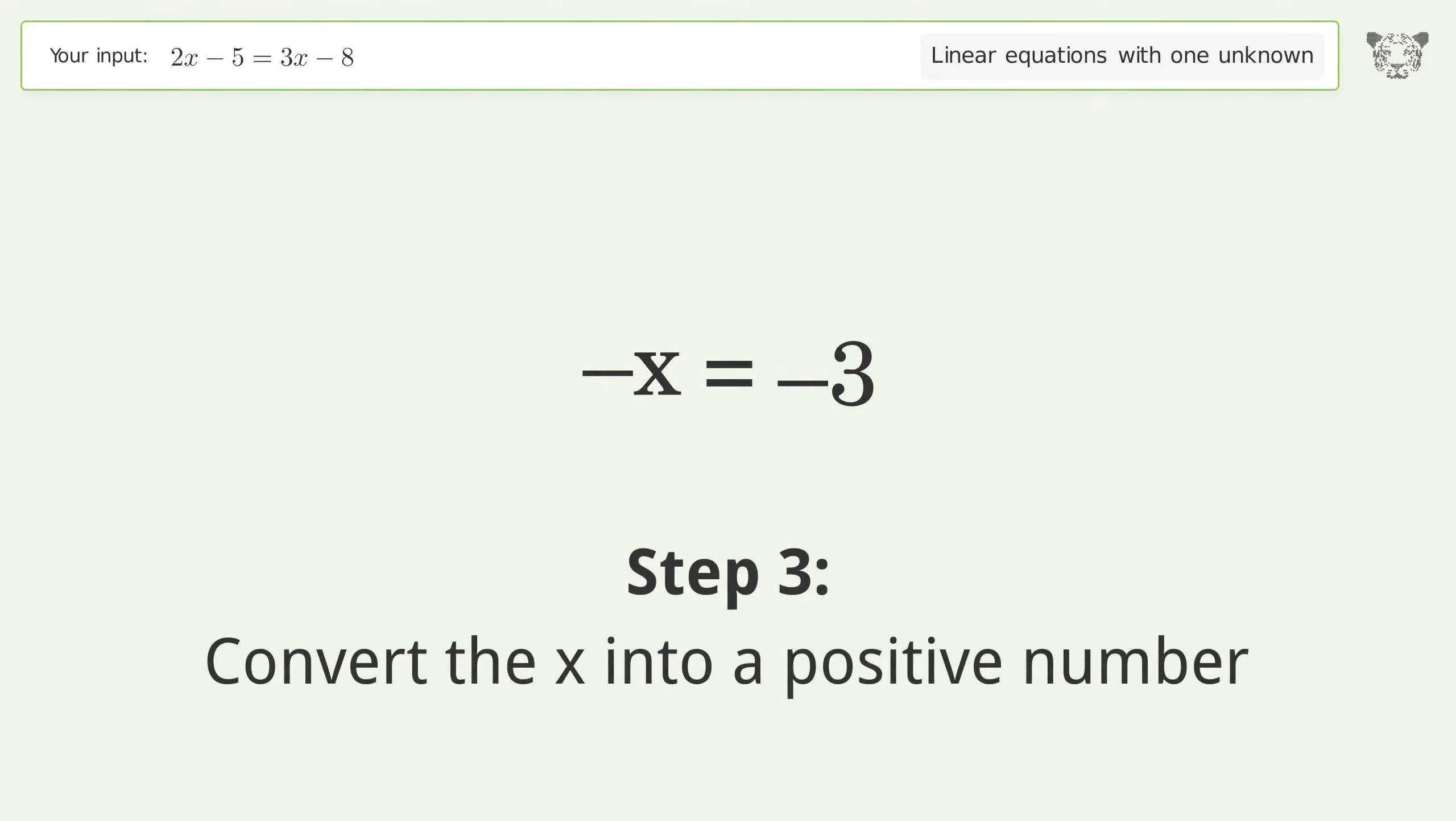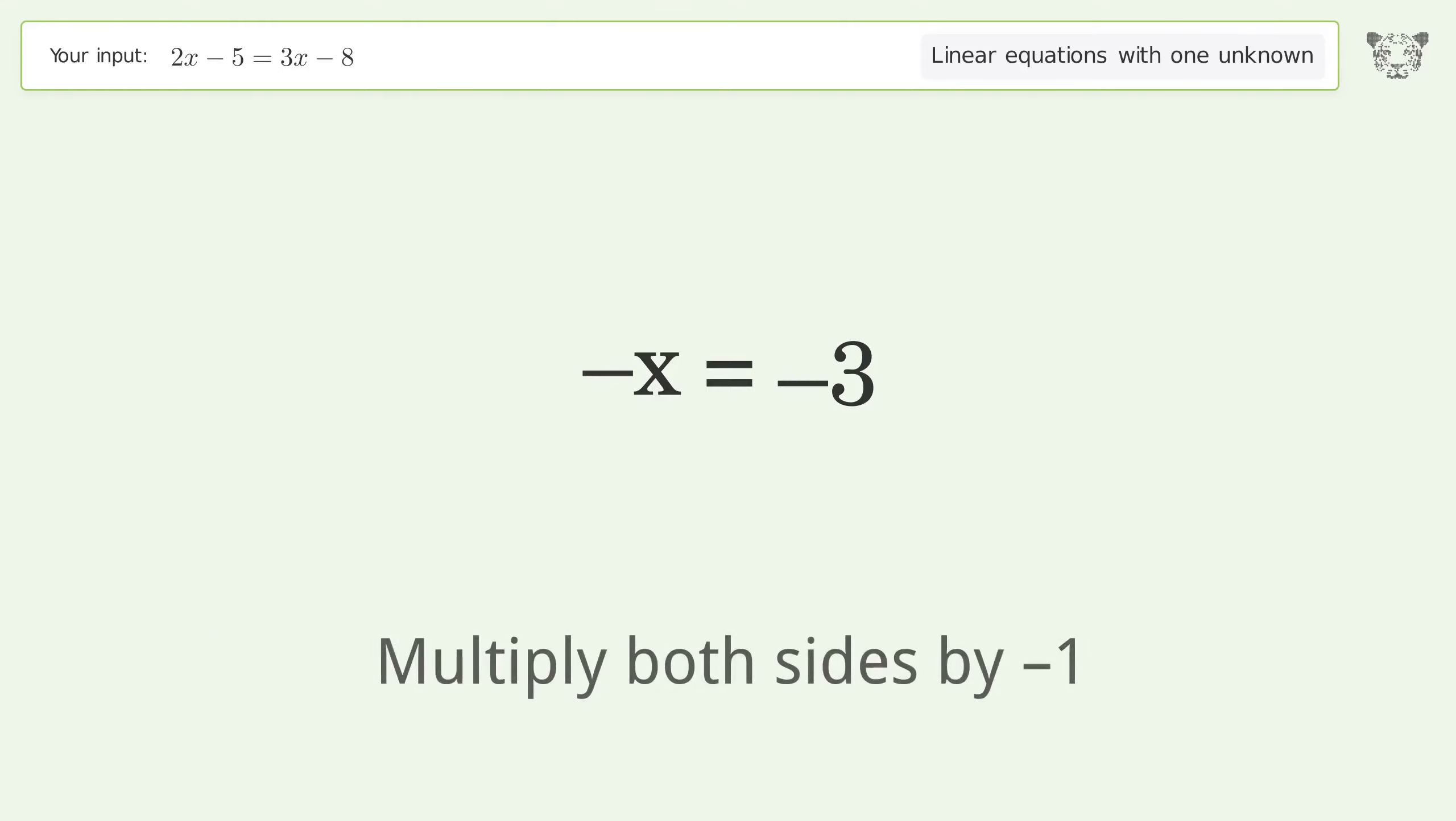x equals 3. Convert the x into a positive number. Multiply both sides by negative 1. Remove the 1s. Simplify the arithmetic. And so the final result is x equals 3.